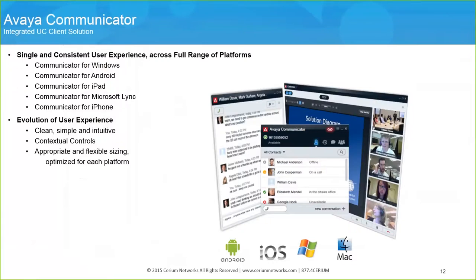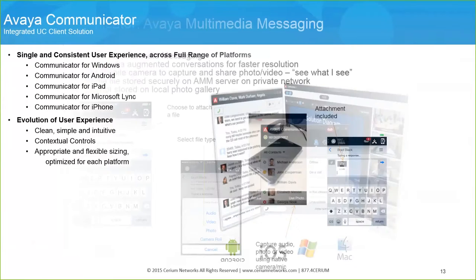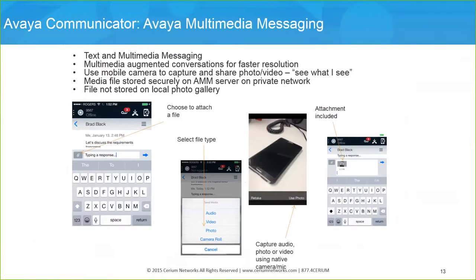Moving on from hard endpoints to soft endpoints, Avaya Communicator is the SIP-based soft client that supports Windows, Android, and Apple smart devices, and integration with Microsoft Skype for Business. These clients come as entitlements with Core Suite licensing in Avaya Aura. In addition to supporting telephony, these clients support deep integration with other Avaya Aura applications such as multimedia messaging — a rich IM solution supporting text, video, and audio — integration with Avaya Aura Presence Services, Avaya Aura Conferencing with conference controls from the client, and Avaya Aura Messaging providing visual voicemail when deployed with Avaya Client Enablement Services.